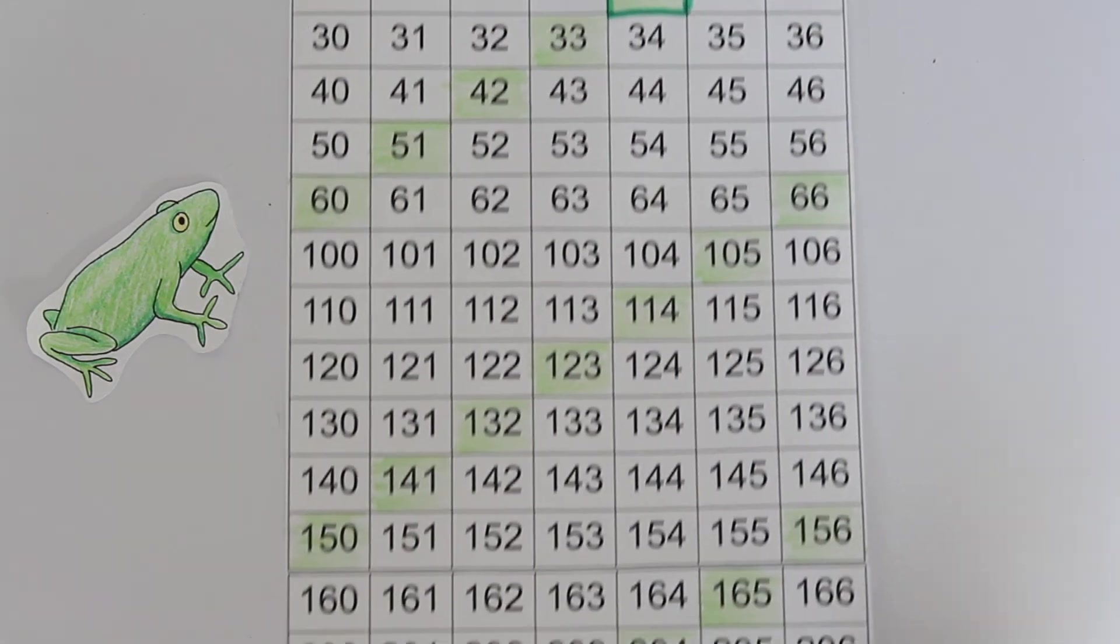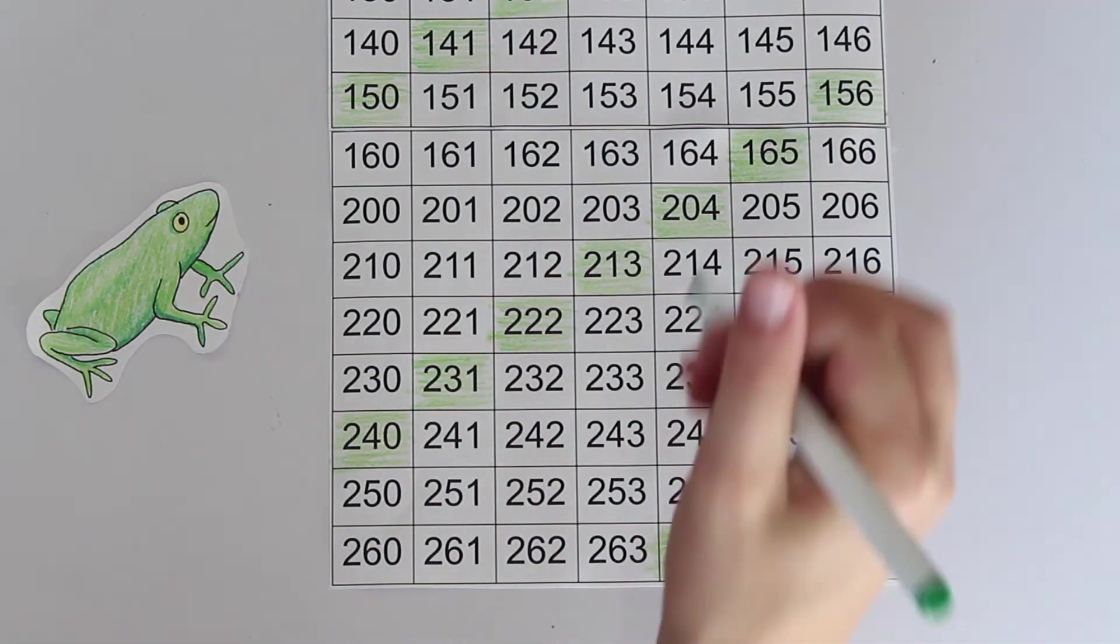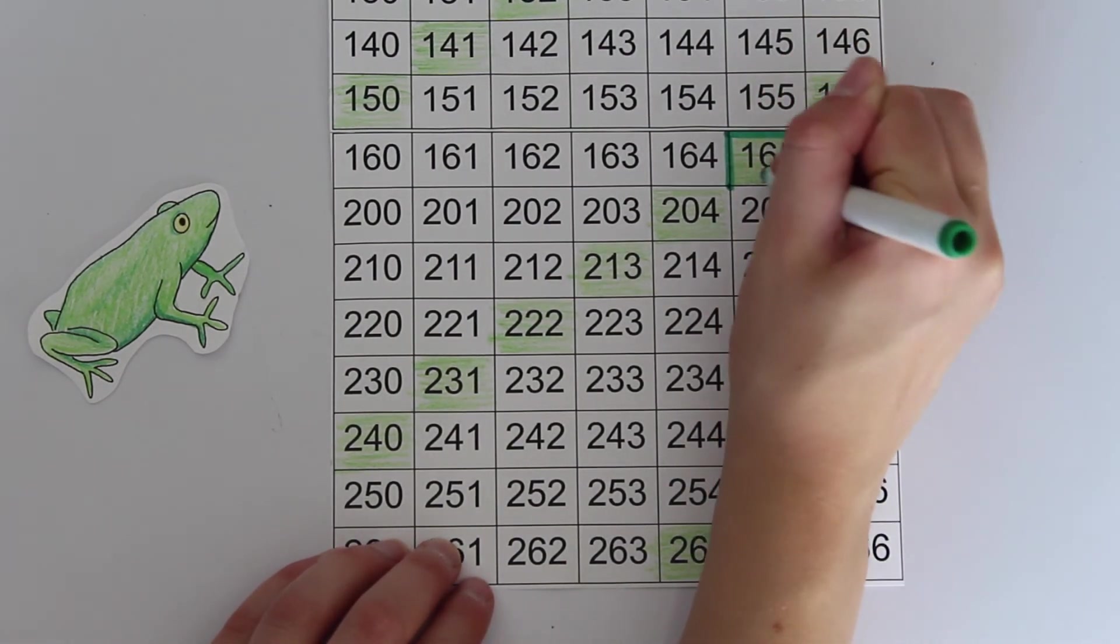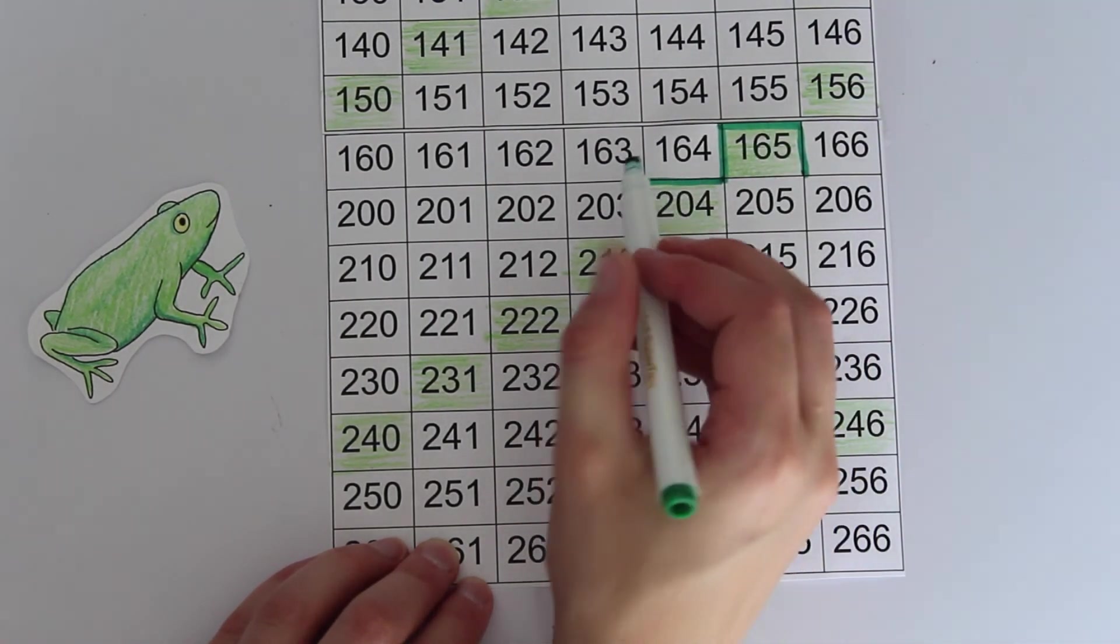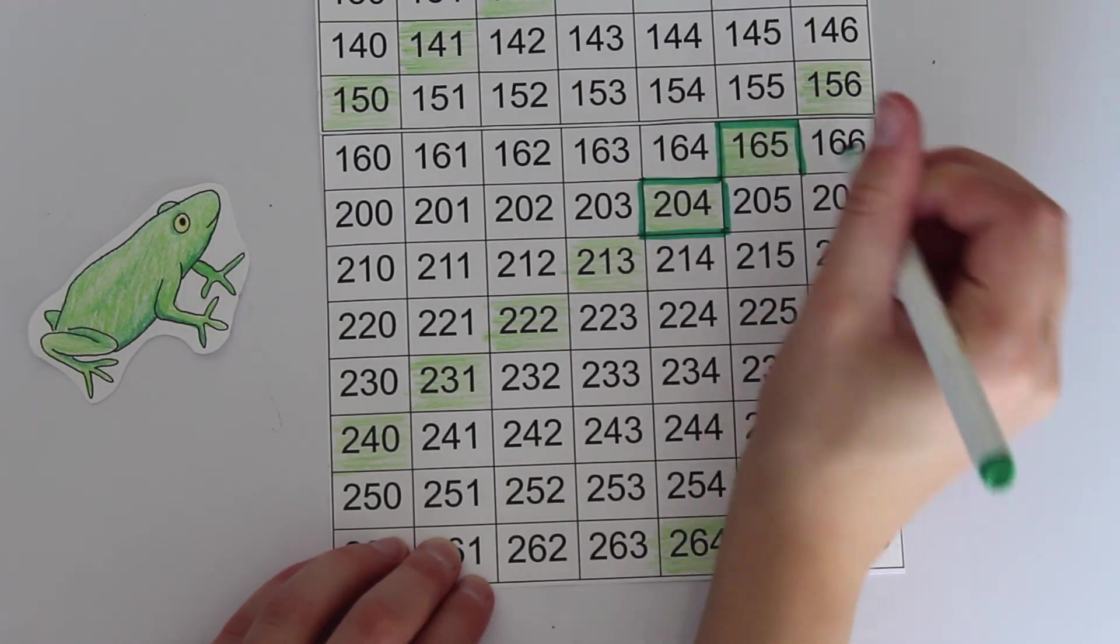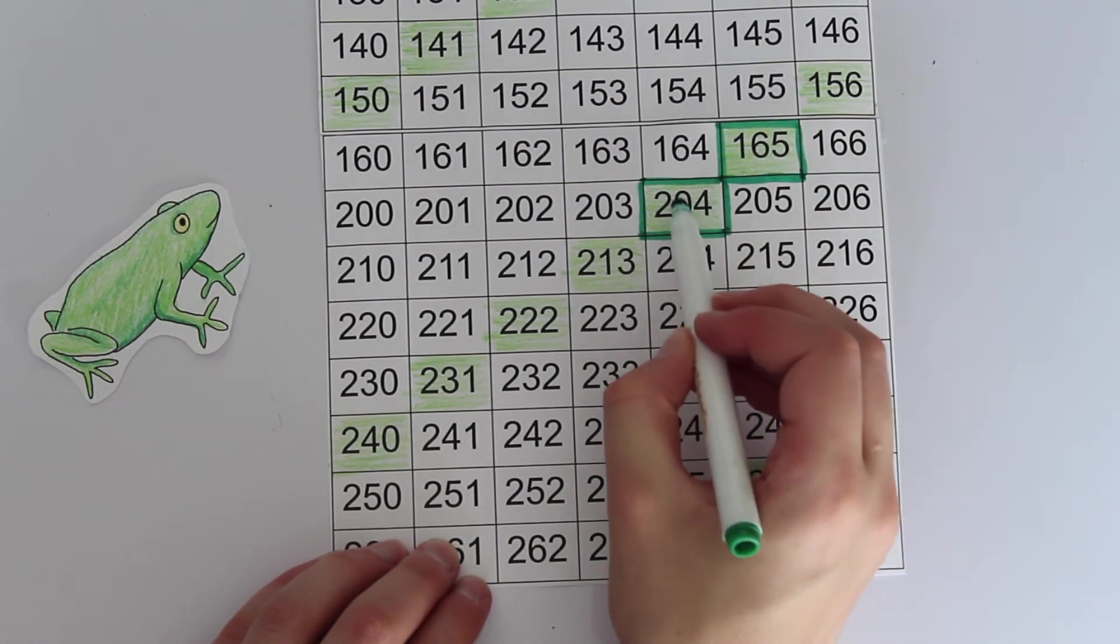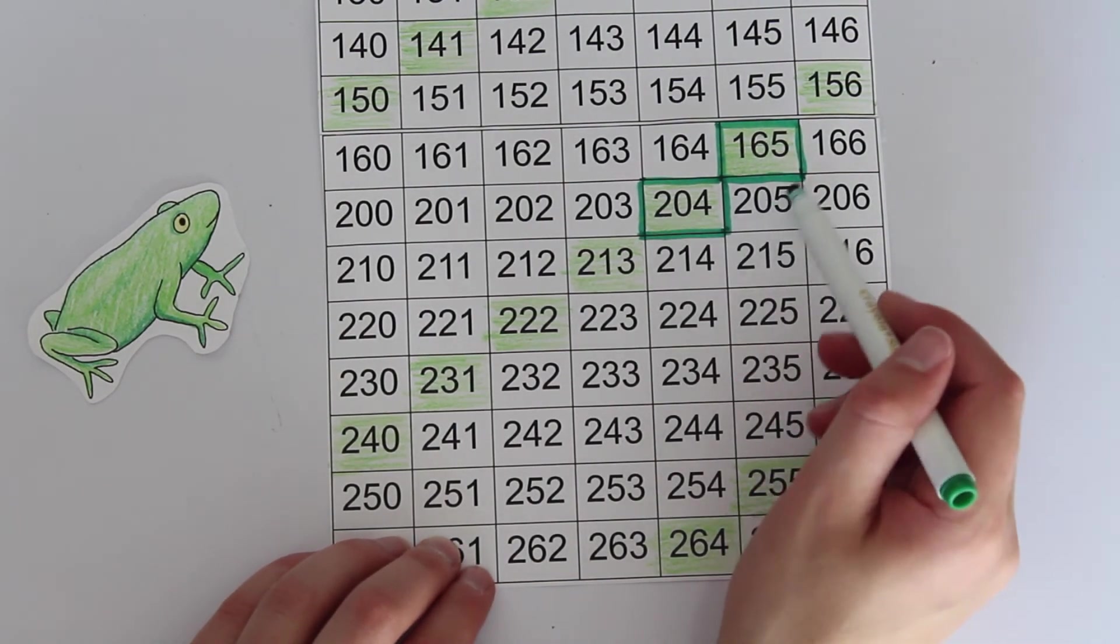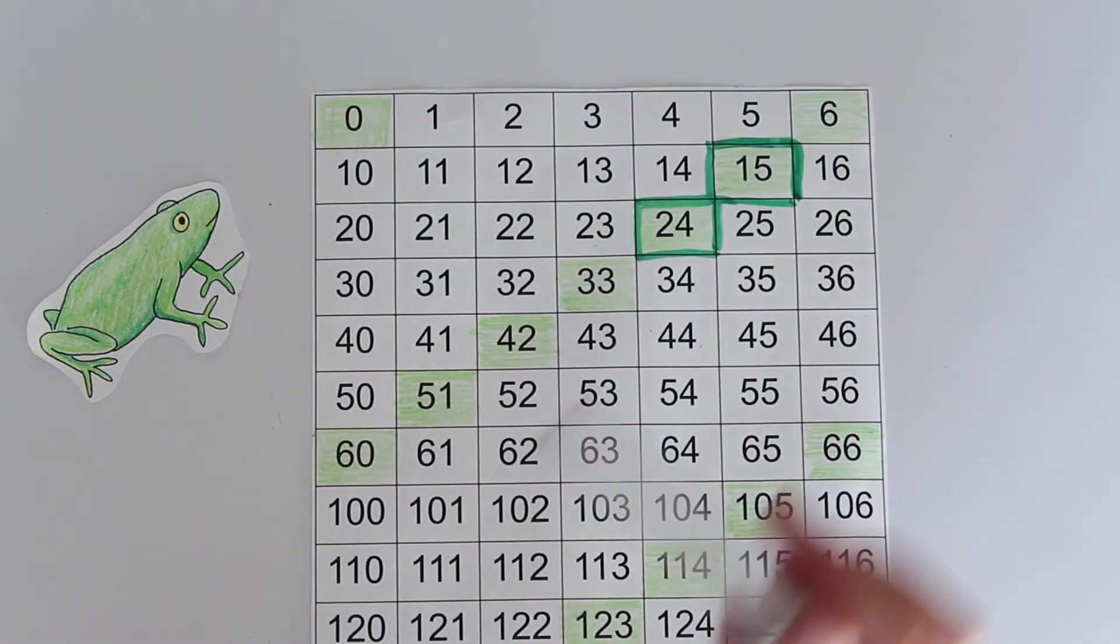But if the second place is 6, like in 165, the second place will become 0 and the third place will increase by 1. When Mr. Frog leaps from 165 to 204, the total sum of the digits decreases by 6. We can expand this reasoning if the third, fourth, fifth, or more places are 6 as well. So when Mr. Frog moves along a diagonal, either the sum of the digits remains the same, or it decreases by a multiple of 6. This means that if the first square in a diagonal satisfies the divisibility trick, then all the others will as well.